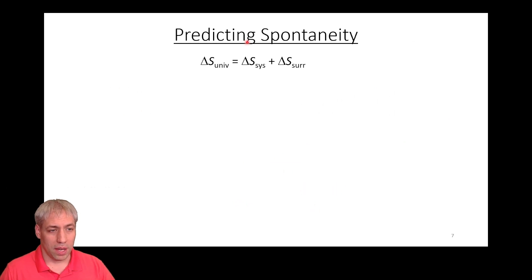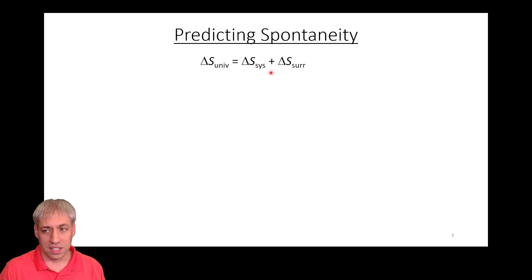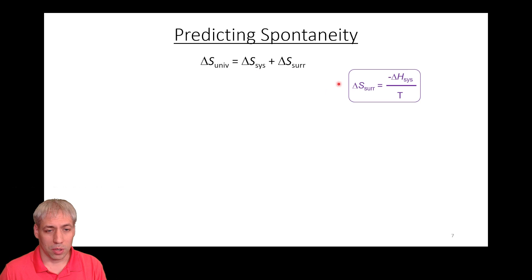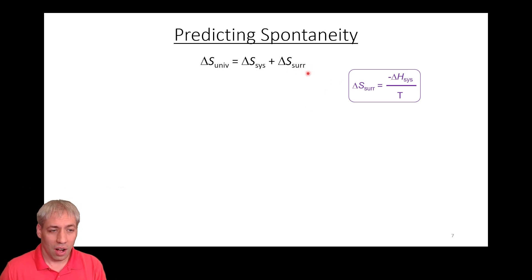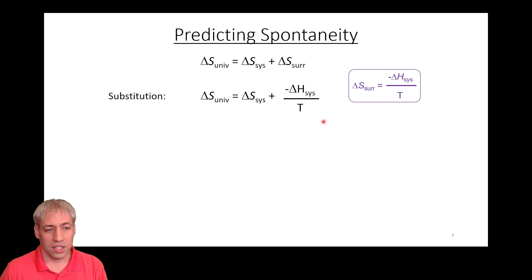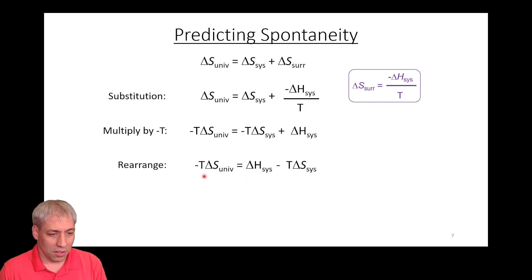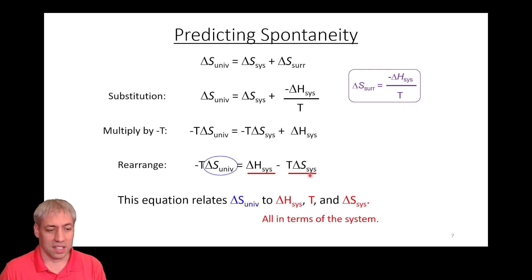This becomes really important when we look at our equation for predicting spontaneity. We have delta S universe equals delta S system plus delta S surroundings. Delta S of the system we can calculate from standard entropy of the reaction. For delta S of the surroundings, we now have the proportionality to insert. Rearranging by multiplying through by T, we get: negative T times delta S universe equals delta H system minus T times delta S system.